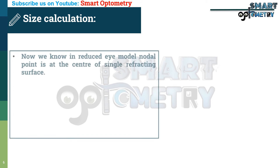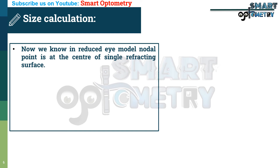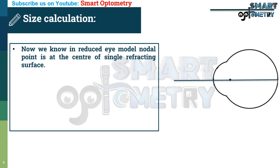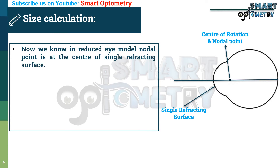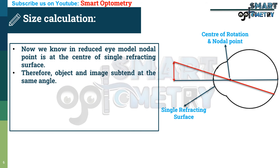Now, we know that in the reduced eye model, the nodal point is at the center of the single refracting surface. This is a figure of the reduced eye model with a single refractive surface. Here is the center of the single refractive surface, which is also the nodal point of the eye. We know that rays directed towards the nodal point will go straight to the retina without bending. Therefore, the object and image subtend the same angle at the nodal point.